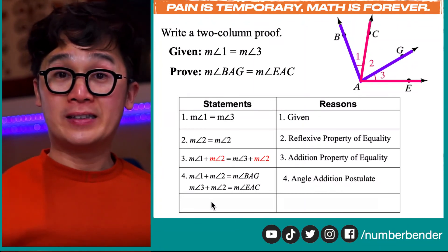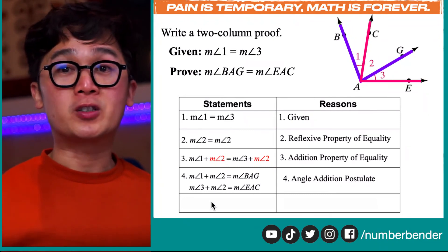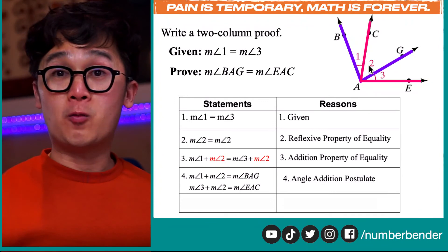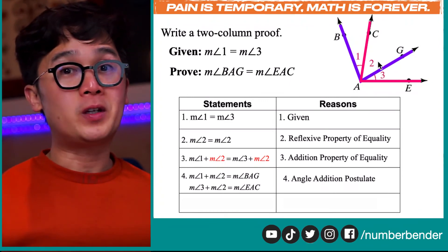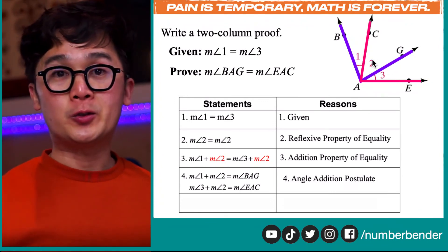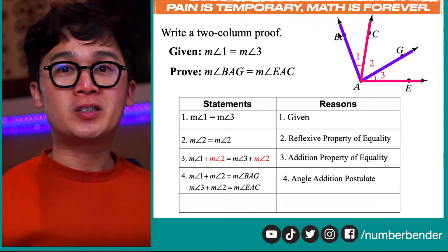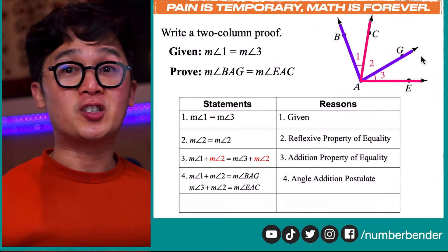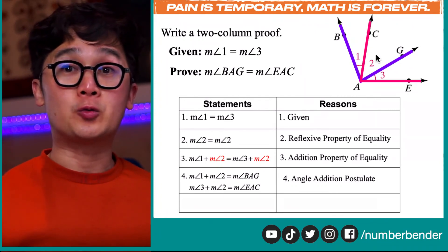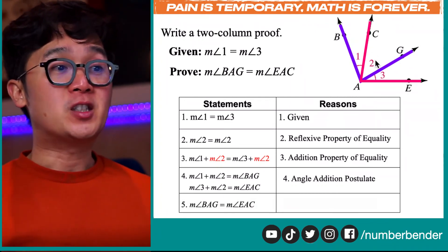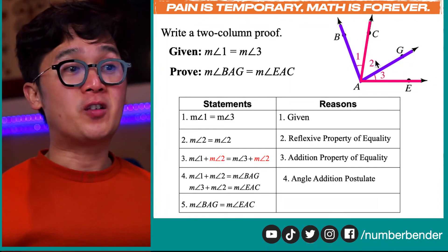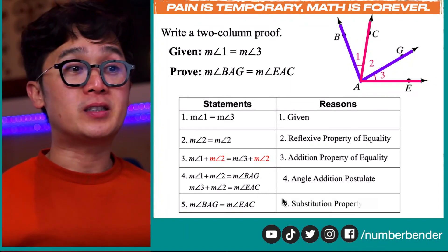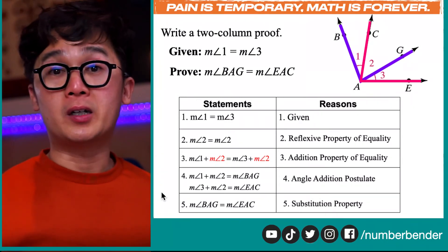From line 4 to the last line, since we established that the sum of angles 1 and 2 equals the sum of angles 3 and 2, we use the substitution property to conclude that the measurement of angle BAG equals the measurement of angle EAC. This is how we establish the proof by writing out the reasons from the properties we use in geometry.